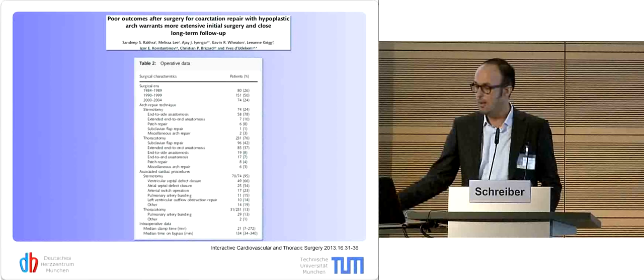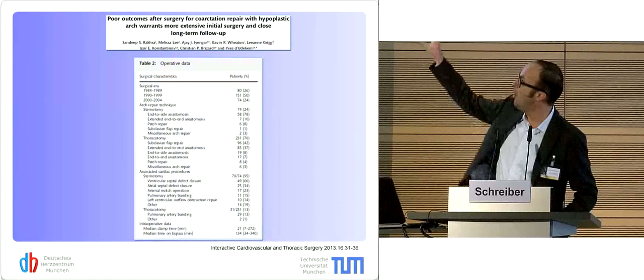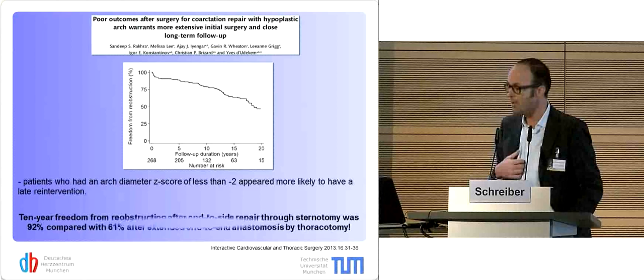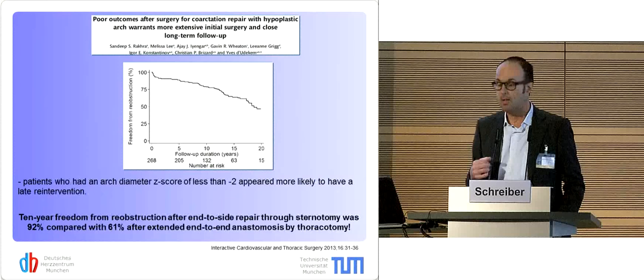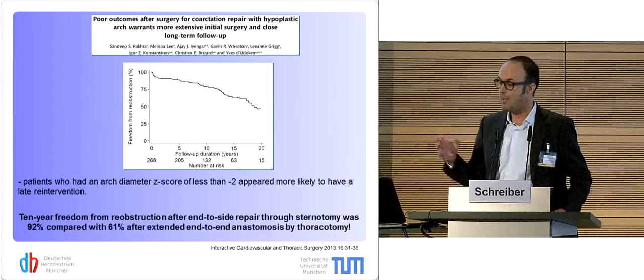This is a publication from the Australian group. They have done a few studies over the years with a lot of patients enrolled, divided into eras, operated with patches, extended end-to-end, and so on. The main message for me was that the 10-year freedom from re-obstruction after end-to-side repair through sternotomy was more favorable than operating through a lateral thoracotomy. And this Z-score of minus two seems to be the magic number.